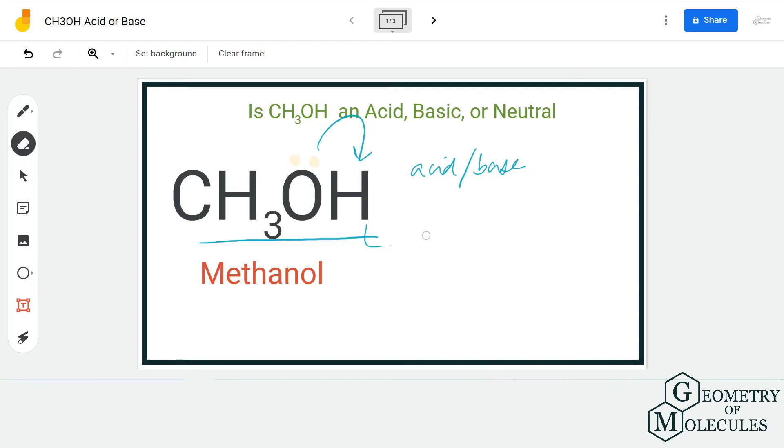this, when methanol reacts with other compounds, it dissociates into a cation and hydroxide. Compounds that show these kinds of properties are known as basic. But when you ask me if it is